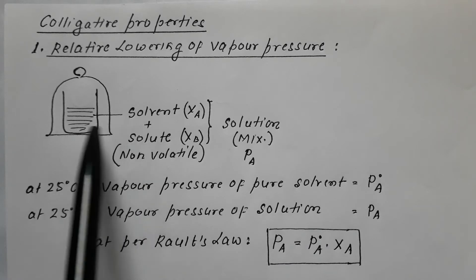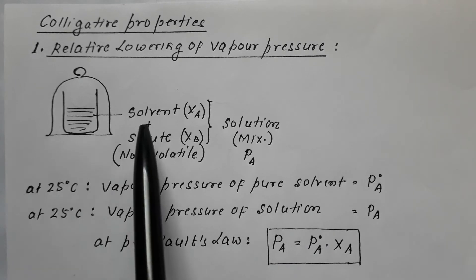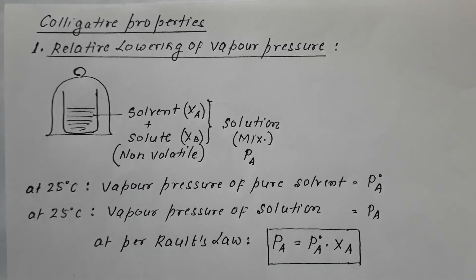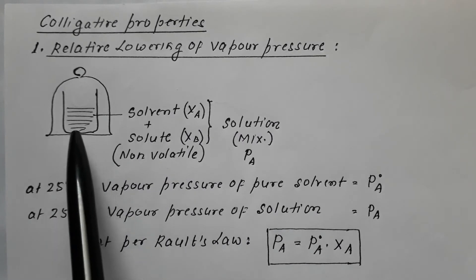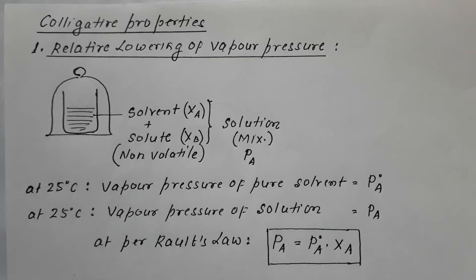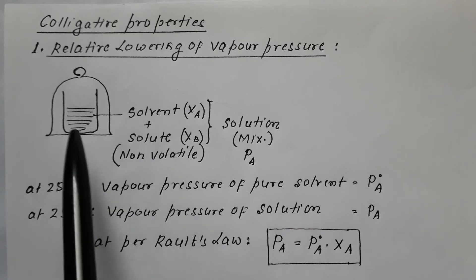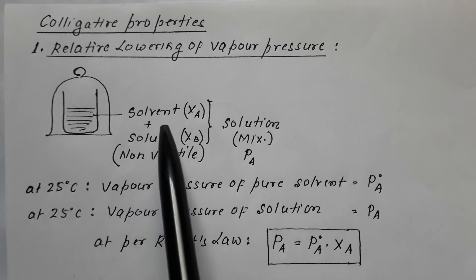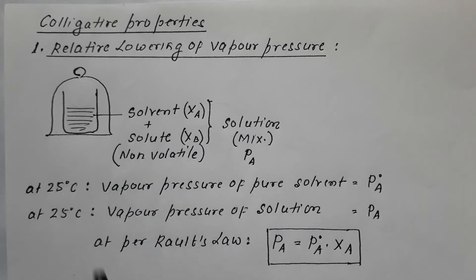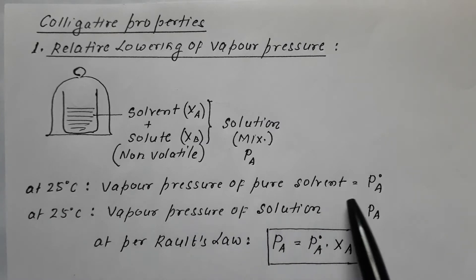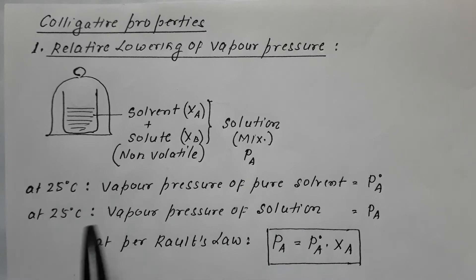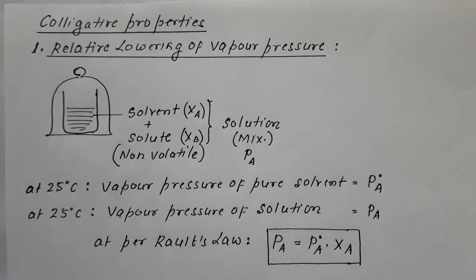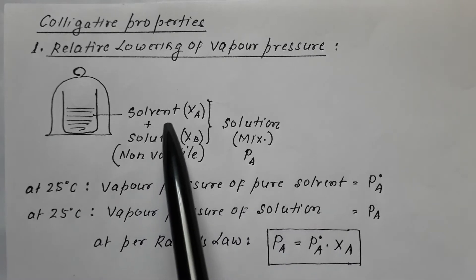Suppose we have taken some volatile solvent in a beaker and we measure the vapor pressure of this liquid. Suppose at 25 degrees centigrade the vapor pressure of this pure solvent is P0A. So at a fixed temperature, the vapor pressure of the pure solvent is P0A.